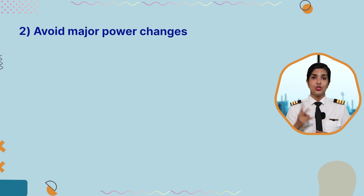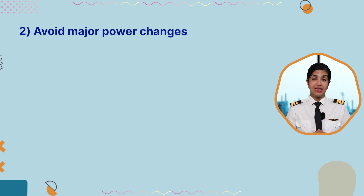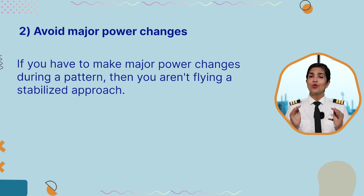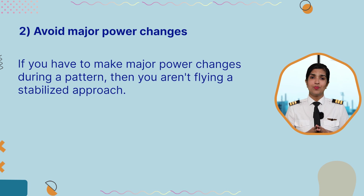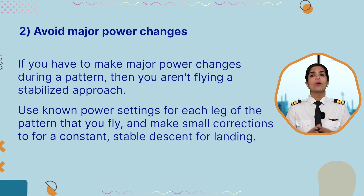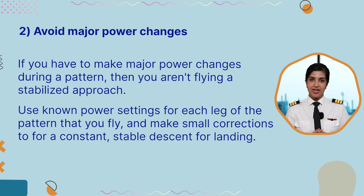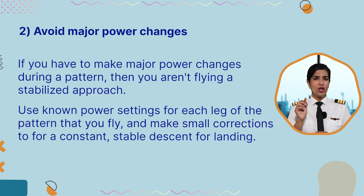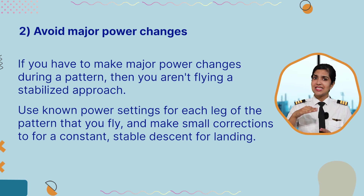Number two: try to avoid major power changes at the end. If you have to make major power changes during a pattern, then you aren't flying a stabilized approach. Use known power settings for each leg of the pattern and make small corrections for a constant and stable descent for landing.